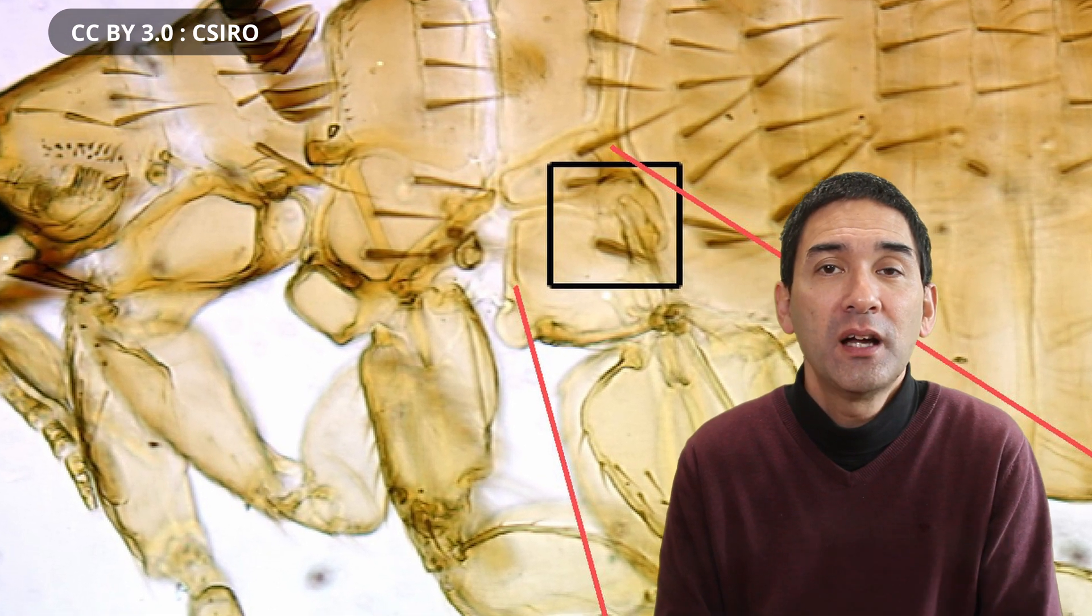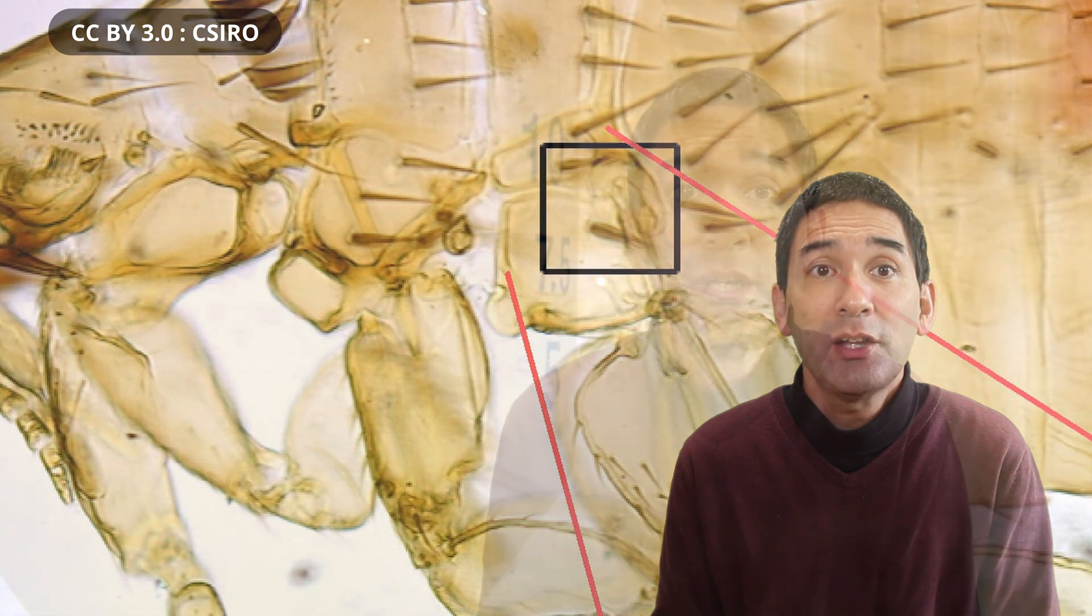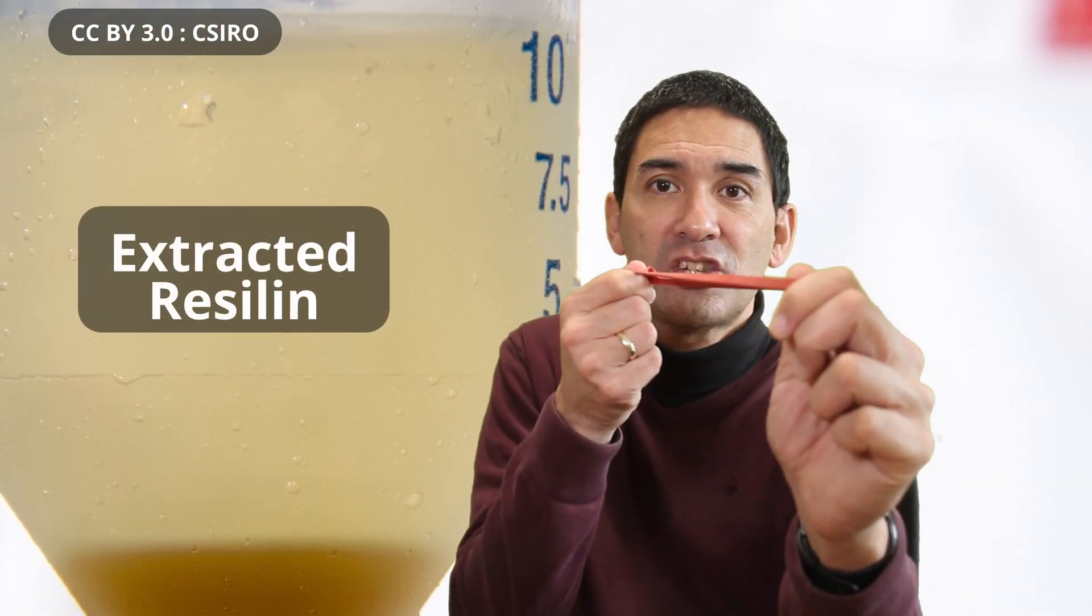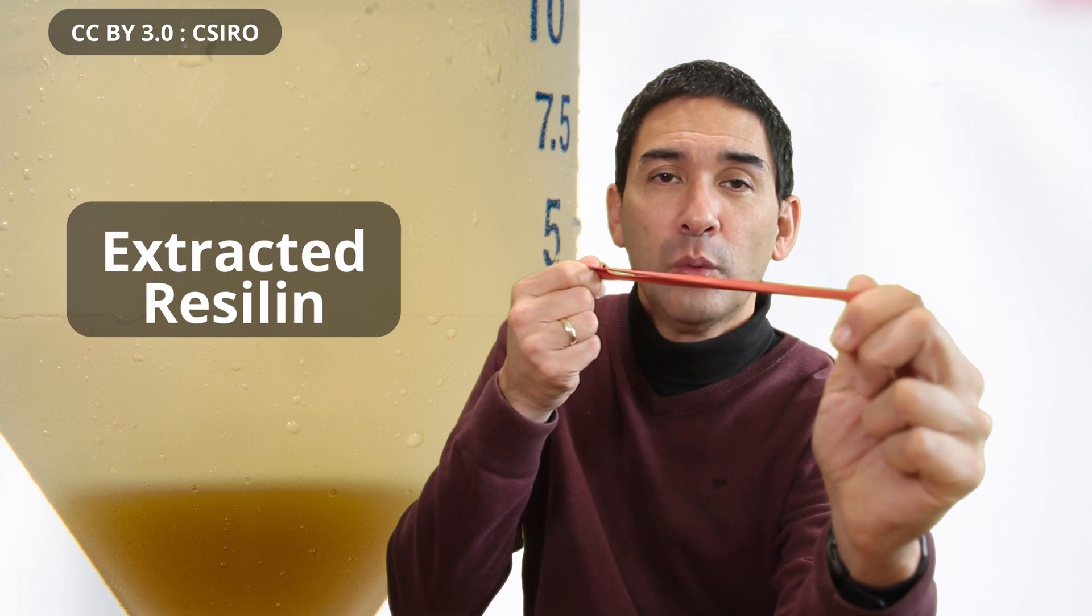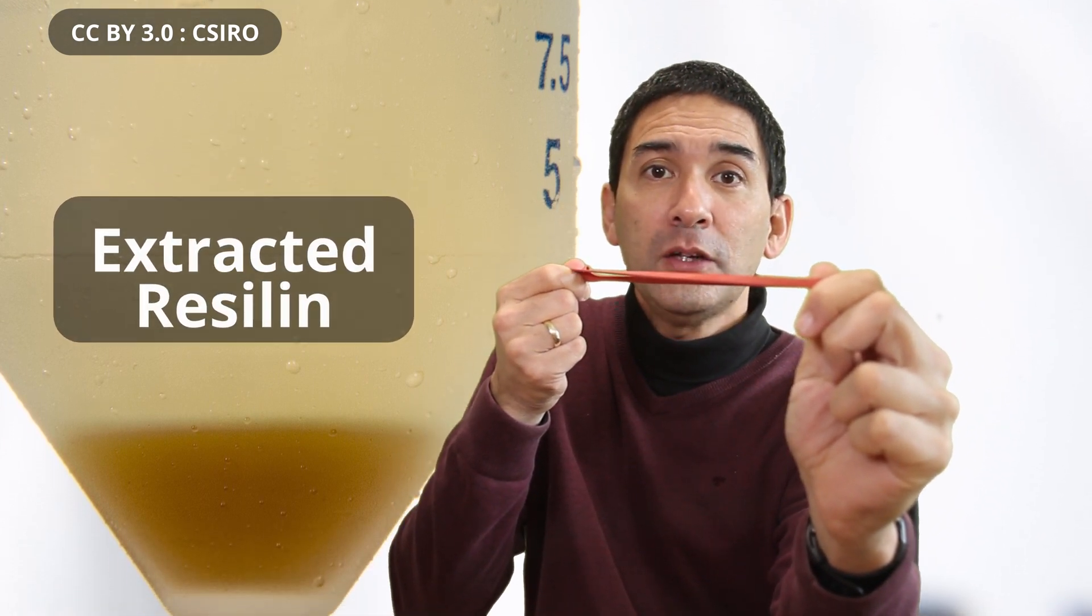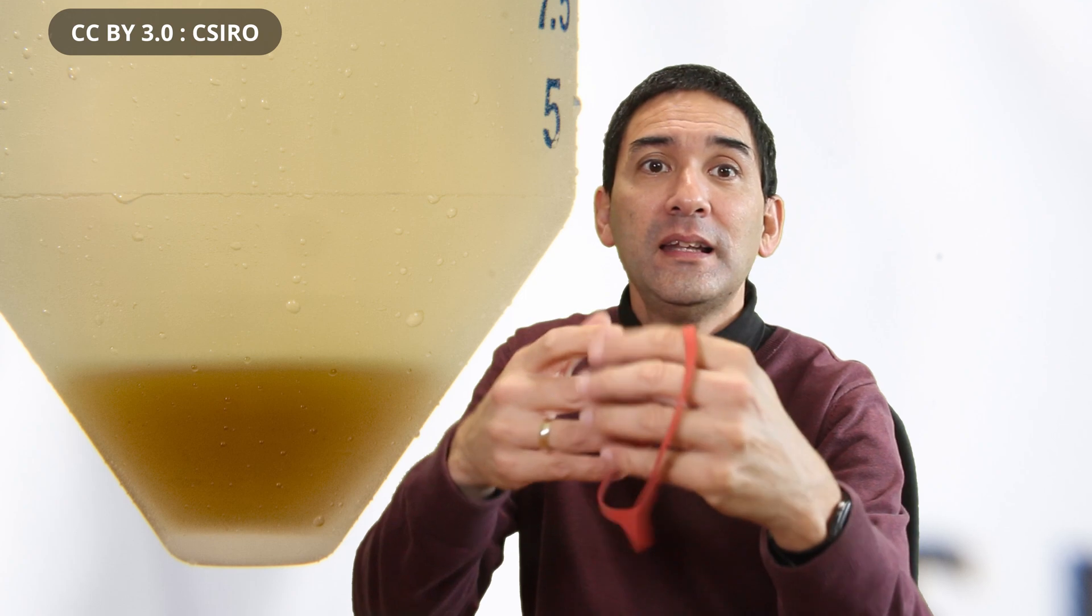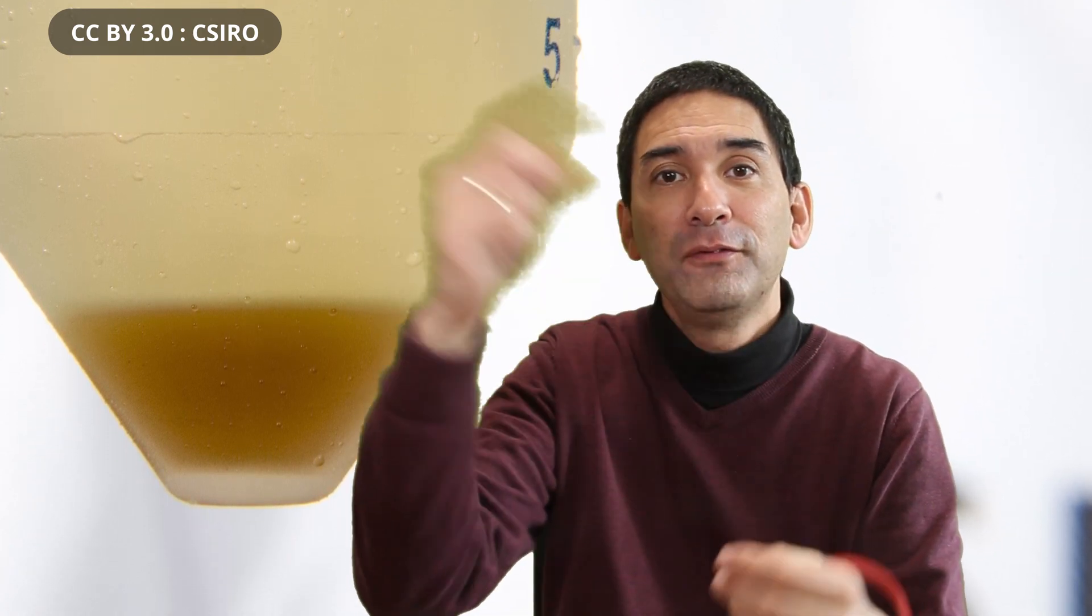This organ works like a rubber band that you stretch. So the flea uses the muscles to slowly stretch the organ, and when it wants to jump, the organ quickly contracts and the legs snap backwards and the flea jumps off.